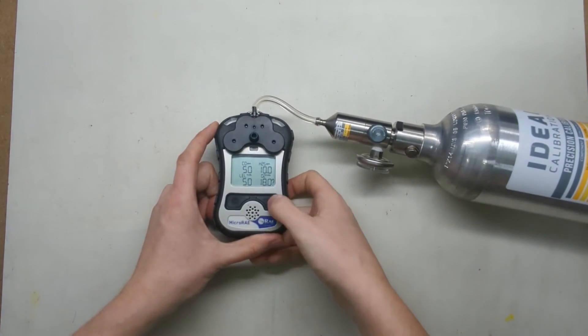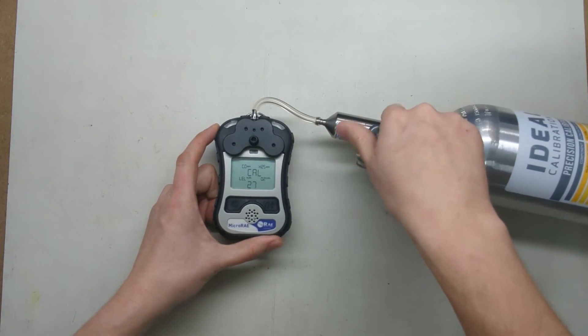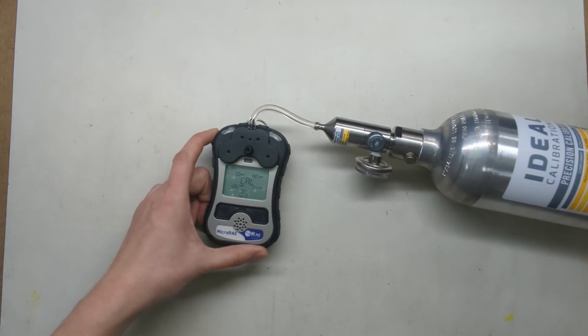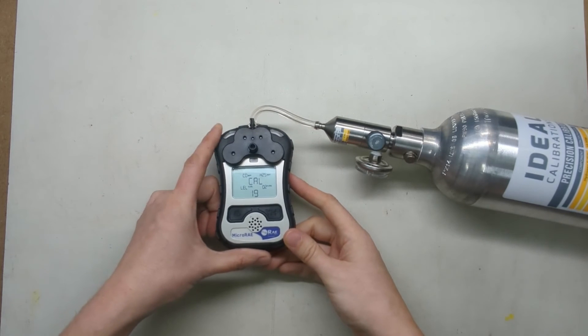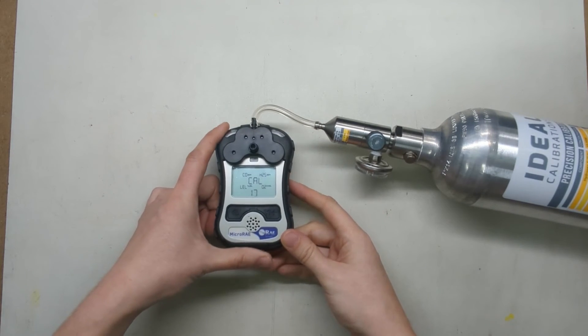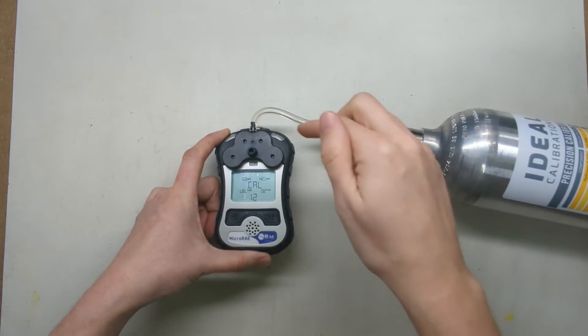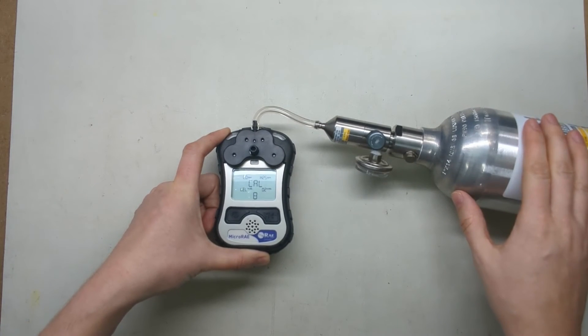Now we're all ready. We're going to hit the yes button. It's going to say cal, turn your gas on, move the cylinder so it stops dinging. While it's going through this process, it's bringing the gas values up until they stabilize. Once they've stabilized, that sets the monitor to the values inside the cylinder.